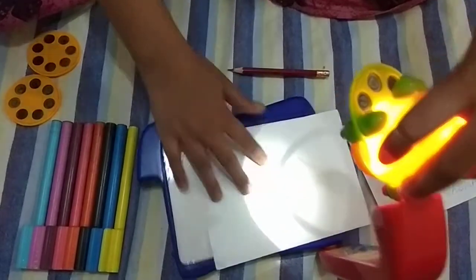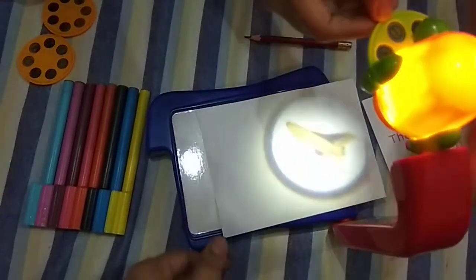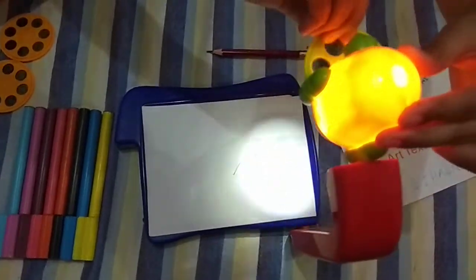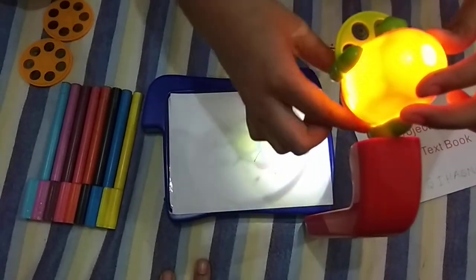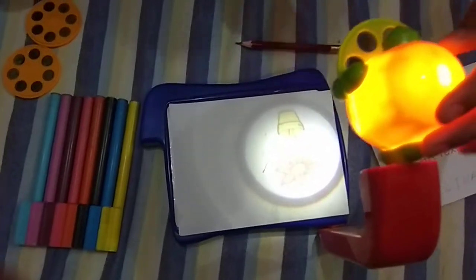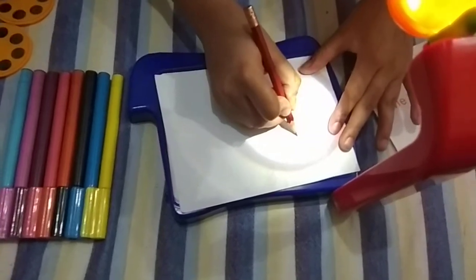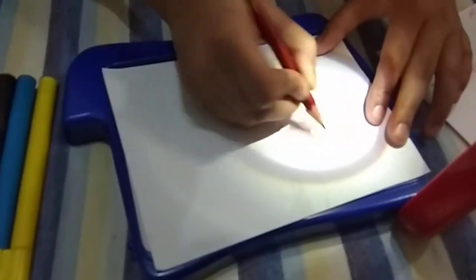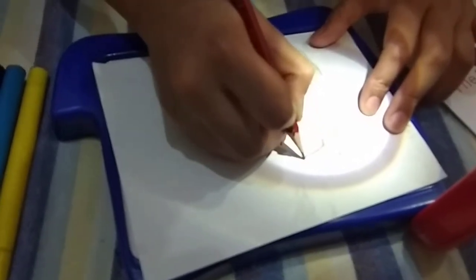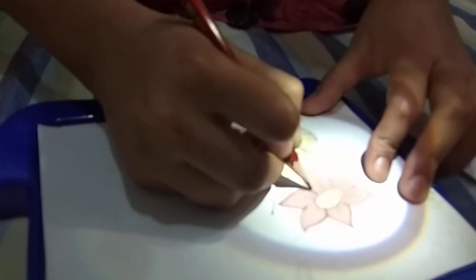If you want to change the image, just rotate it like this. Let's draw a flower. So now I'm gonna be tracing it. Let's trace it guys. This is so fun to play with, you know.